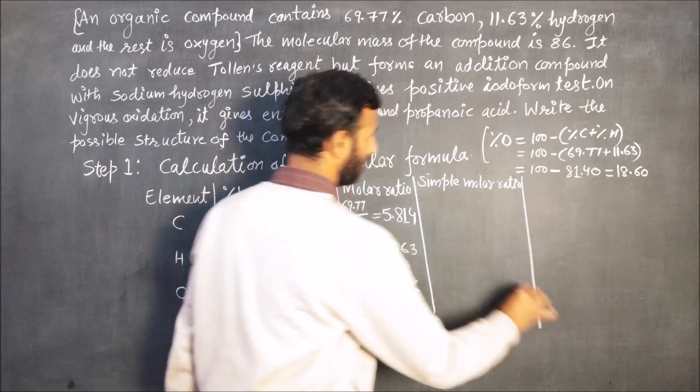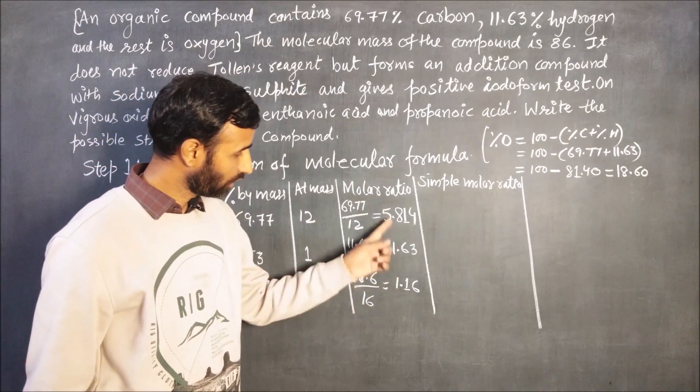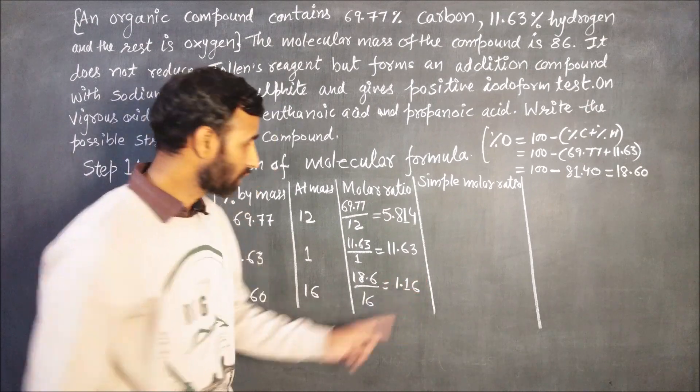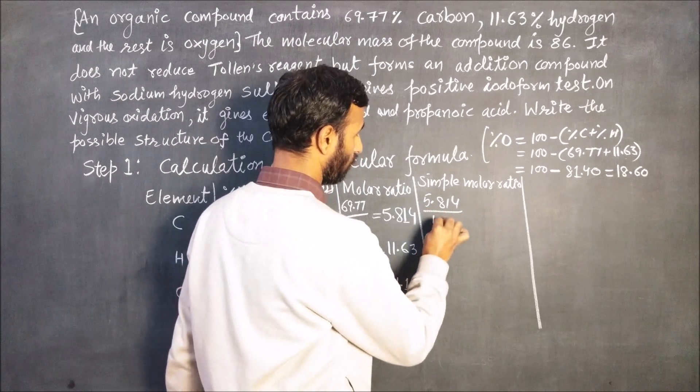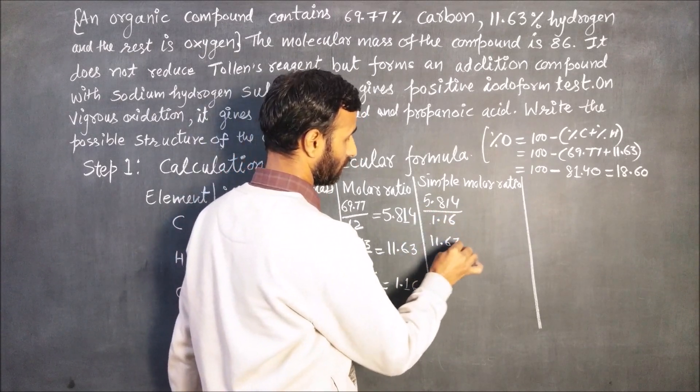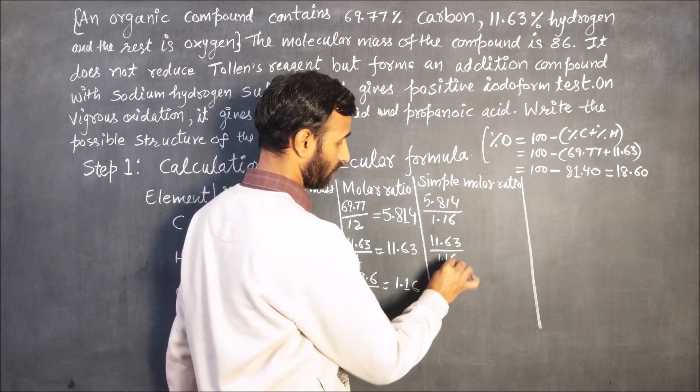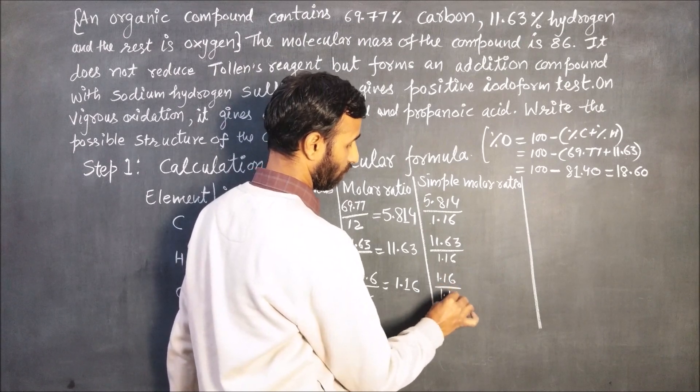To calculate simple molar ratio, just divide all the three by the minimum value. Minimum value is 1.16. So here we have 5.814 divided by 1.16, 11.63 divided by 1.16, 1.16 divided by 1.16.